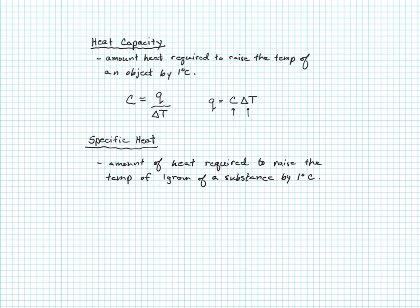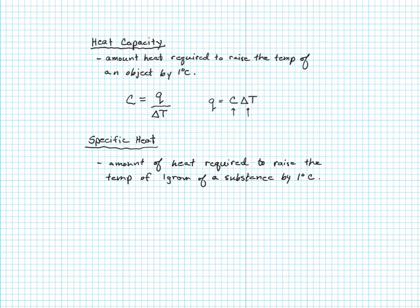The difference is that in specific heat, we're looking at differing amounts of the substance based on mass, whereas in heat capacity we were talking about an object — like a frying pan or a particular block of some material. For example, we can look at how much heat it takes to heat up a steel fork versus a steel barrel. There's a mass difference there, and the amount of heat required to raise the temperature of a fork by one degree Celsius is going to be much less than for a barrel.